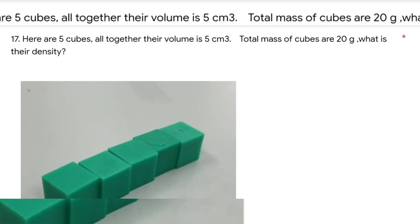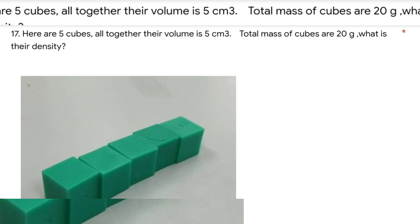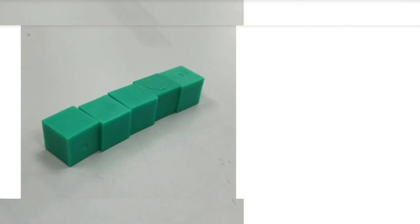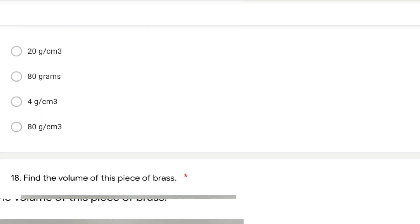In this question, there are 5 cubes; together their total volume is 5 centimeter cubed and their total mass is 20 grams. What is their density? Density equals mass divided by volume: 20 divided by 5 = 4 grams per centimeter cubed. That is the answer.